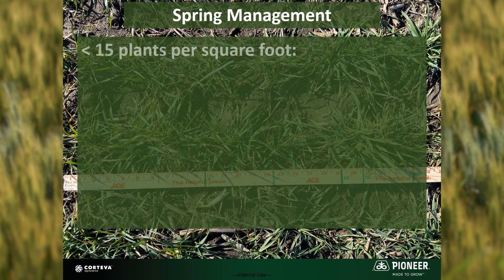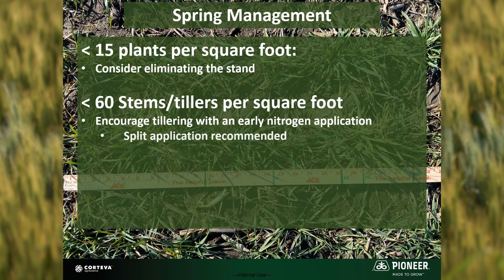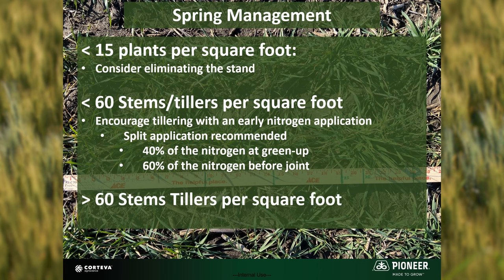Assessing the stand in late winter can help drive management decisions for the spring. If there are less than 15 plants per square foot present, maximum yield will not be reached and consideration should be given to planting another crop. If there are less than 60 stems present, I recommend a nitrogen application before green up to encourage further tiller development. Consider a split nitrogen application with 40% at green up and 60% before joint.